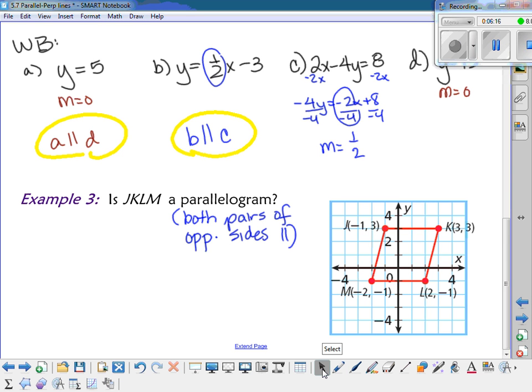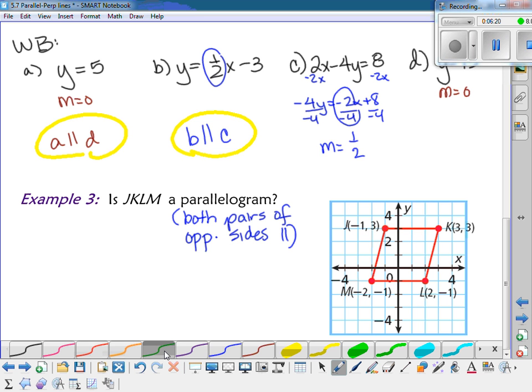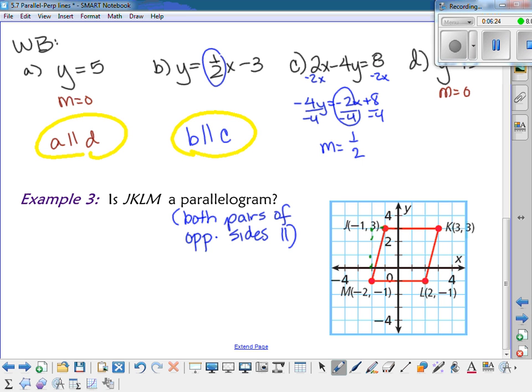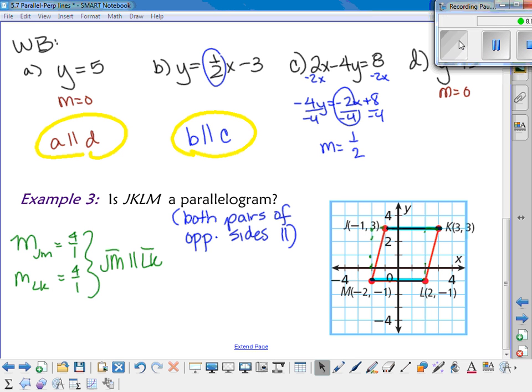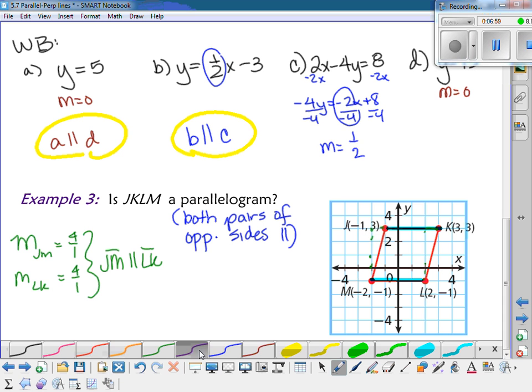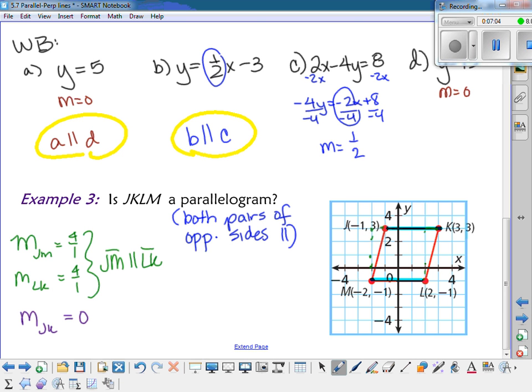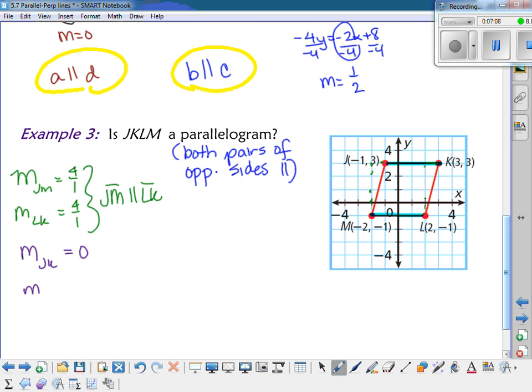Okay, so for this one, if I look at the slope of JM, it's going up 4 and over 1. So the slope of JM is 4 over 1. And then I go over and I look at LK, and it's also going up 4 over 1. So because those two have the same slope, I can say JM is parallel to LK. Then if I also look at the other two sides, the slope of JK, there's no rise at all, so it's 0. And the slope of ML is the same. There's no rise at all, so it's 0.